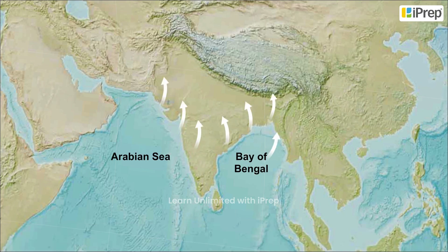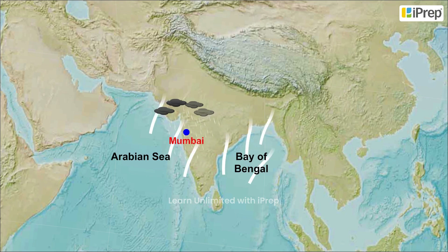The Arabian Sea branch moves north and reaches Mumbai by the 10th of June. By mid-June, it reaches Saurashtra, Kutch, and the central part of the country.